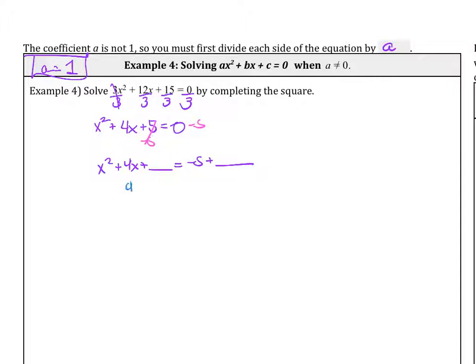Then we find half of b. 4 divided by 2 is 2. And then we square it, and that equals 4. So the 4 gets written into those blank spots.